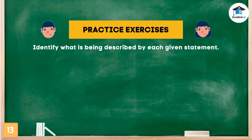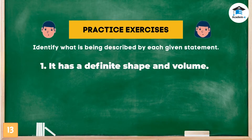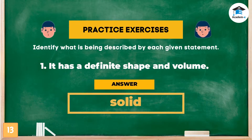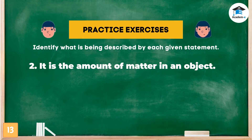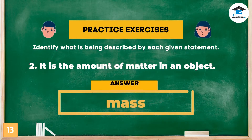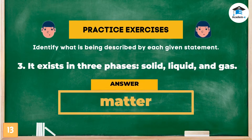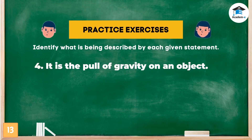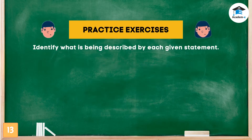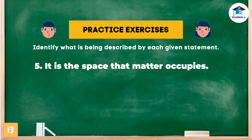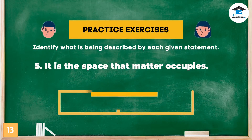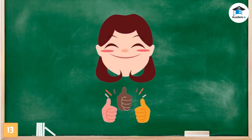Identify what is being described by each statement. One: it has a definite shape and volume — the answer is solid. Two: it is the amount of matter in an object — the answer is mass. Three: it exists in three phases, solid, liquid, and gas — the answer is matter. Four: it is the pull of gravity on an object — the answer is weight. Five: it is the space that matter occupies — the answer is volume. You are awesome — you got them right!